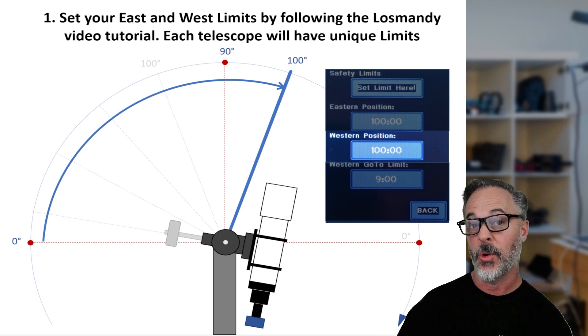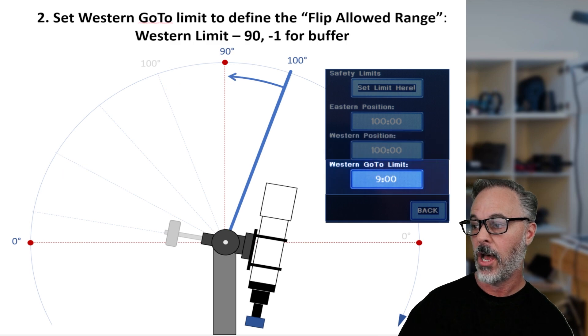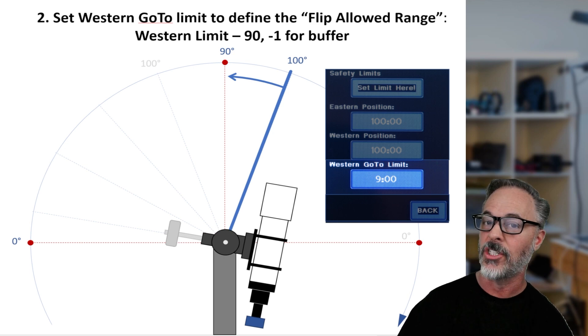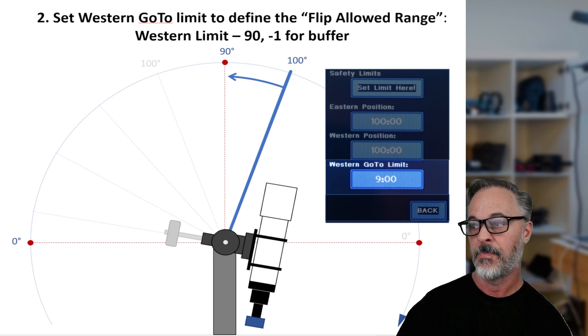This is measured from the eastern horizon at zero degrees and it's going to be about 10 degrees past the meridian, which is considered to be 90 degrees or that line that goes directly from north to south. This is going to set one side of the allowable range when we do the meridian flip.